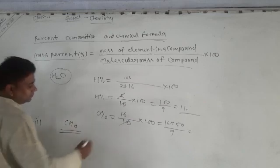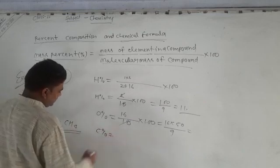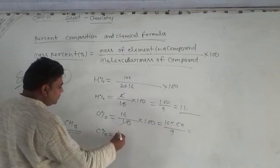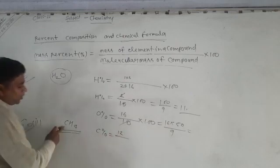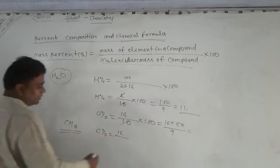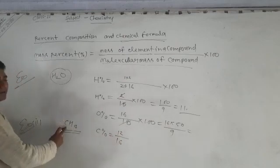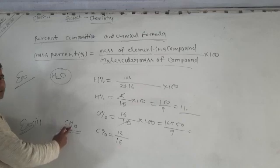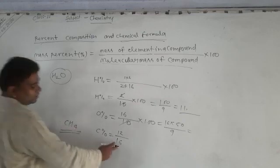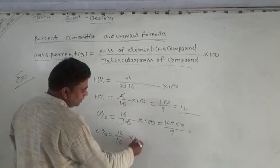See this second example: Methane. Percentage of carbon: carbon is 12, molecular weight of methane is 16. Carbon 12, hydrogen 1, 4 atoms equal to 16 into 100.